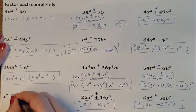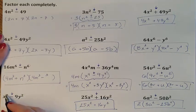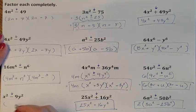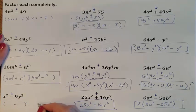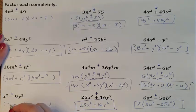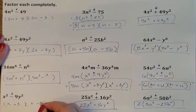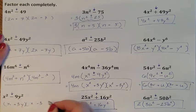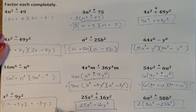Subtraction. I can divide by 2. I can square root 9, and I can divide by 2. So here is my difference of two squares. The square root of x squared is x. The square root of 9 is 3. The square root of y squared is y. And this is my difference of two squares.